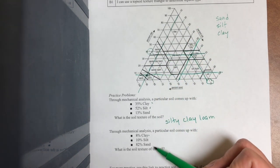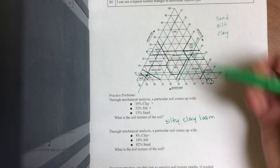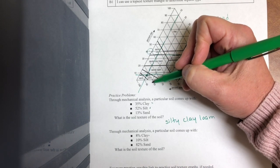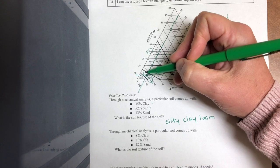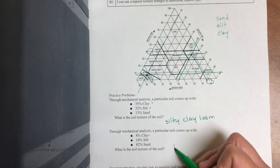And lastly, 82% sand. 82% would be about here, and what do I get? I get loamy sand.